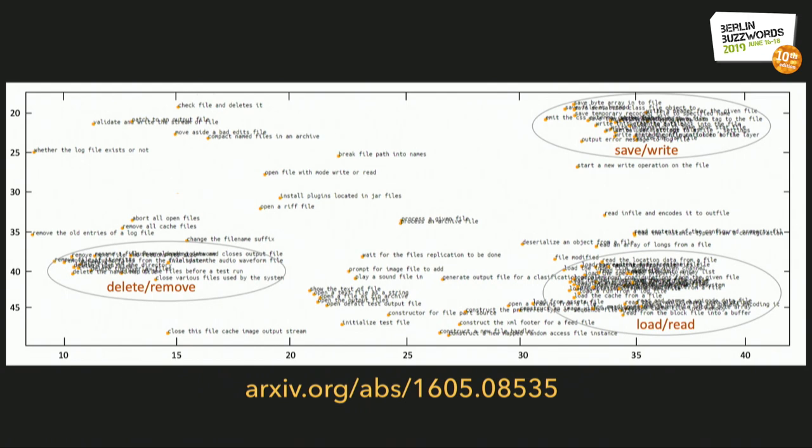Here's an example from a preceding paper by the same group. Code-related actions like 'start a new write operation on the file' and 'remove the old entries of a log file' have been converted to vectors, then projected down to two dimensions with spatial relationships preserved. Natural clusters arise: loading and reading actions form one cluster, save-write actions another, and delete-remove actions a third.